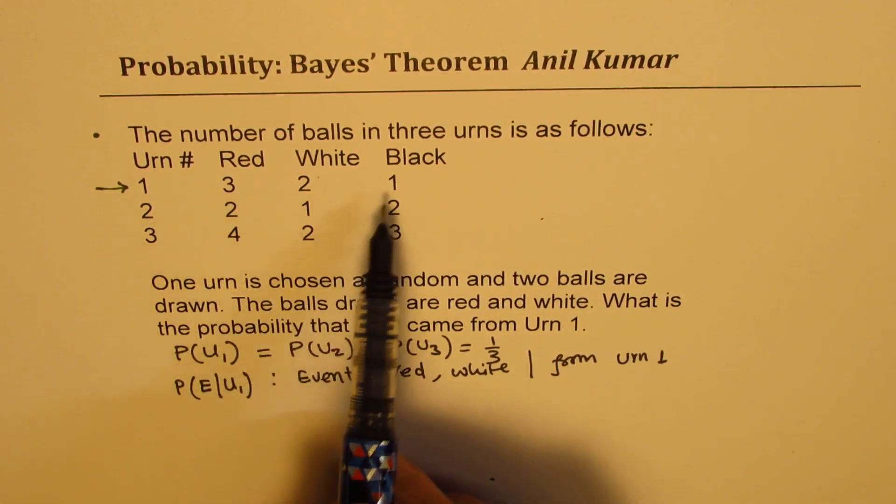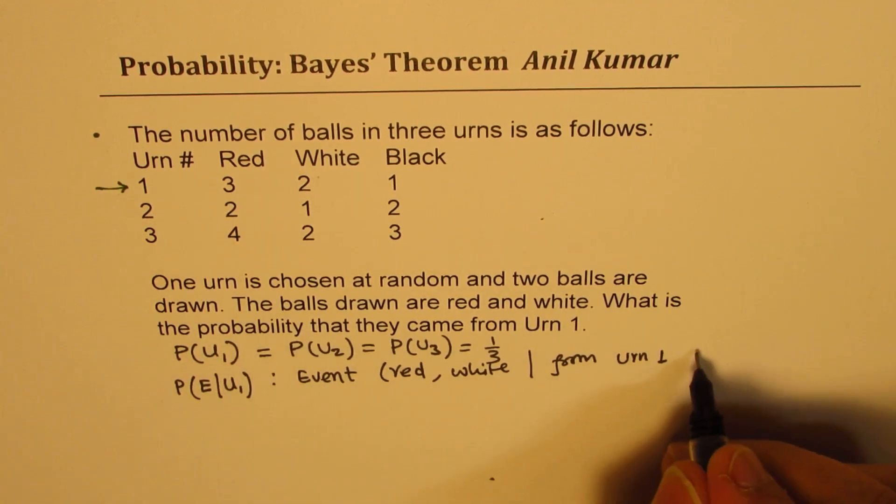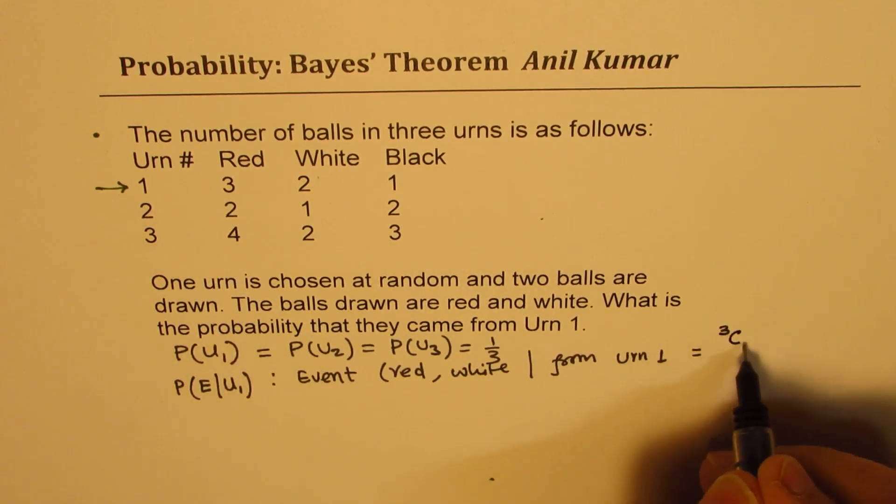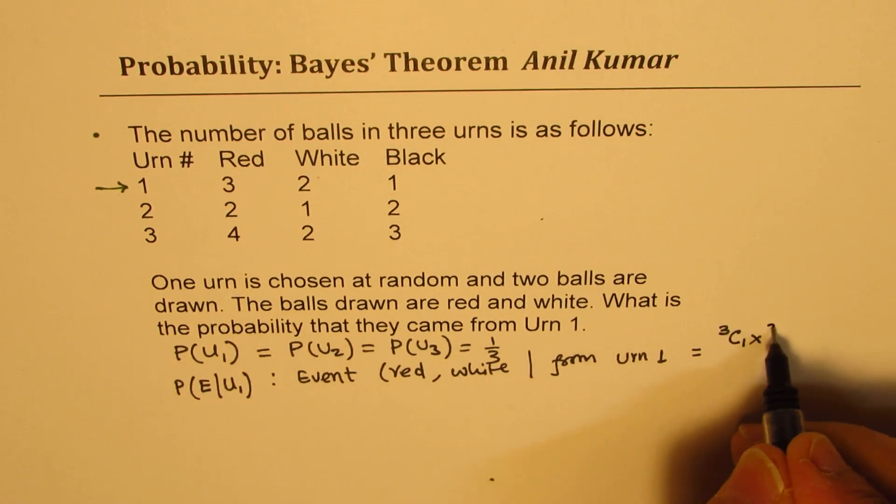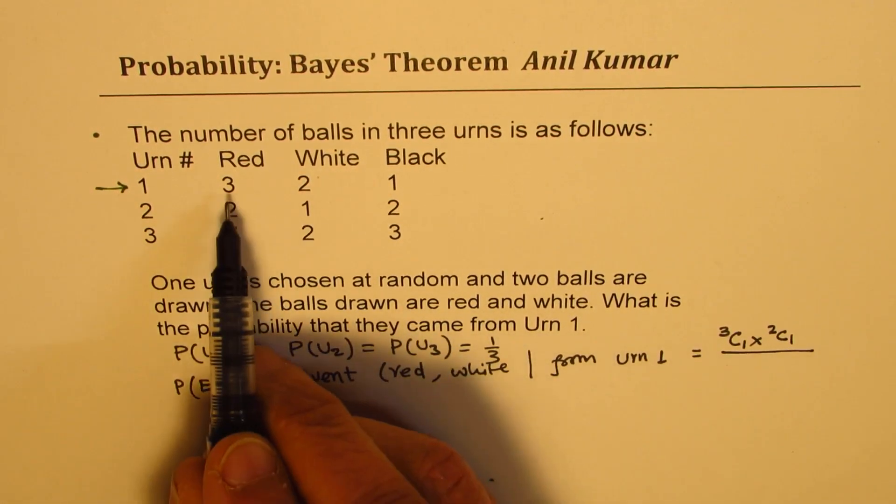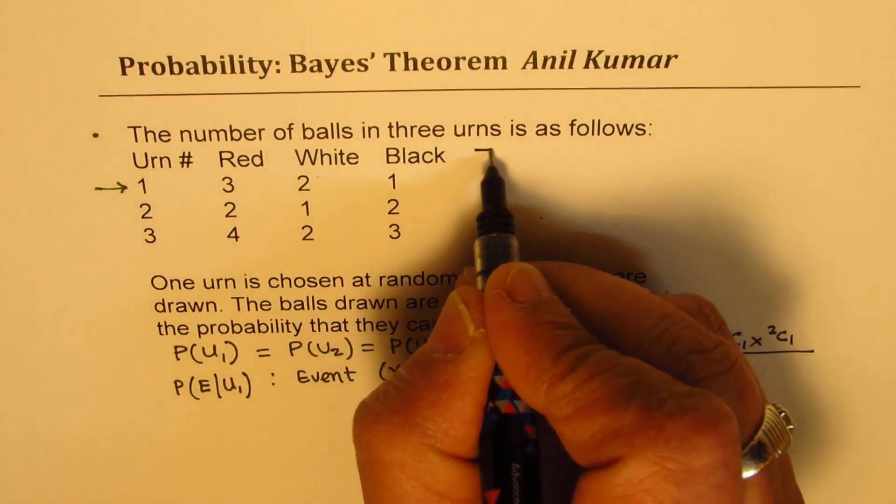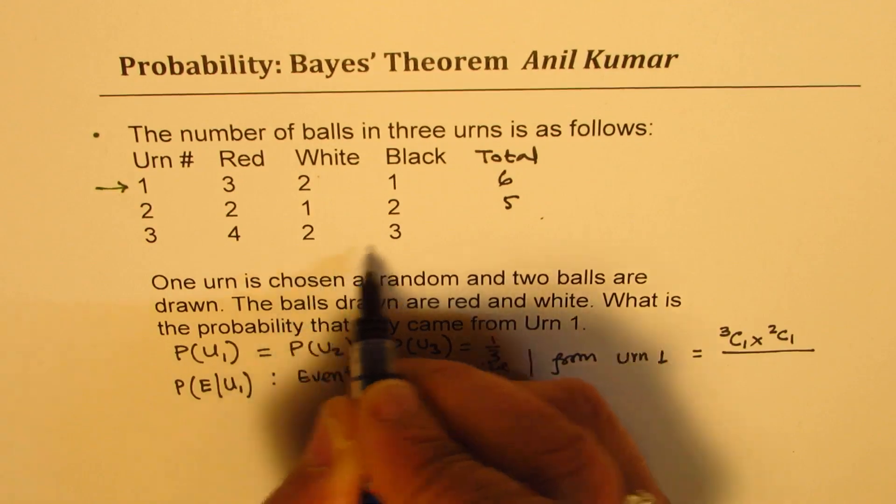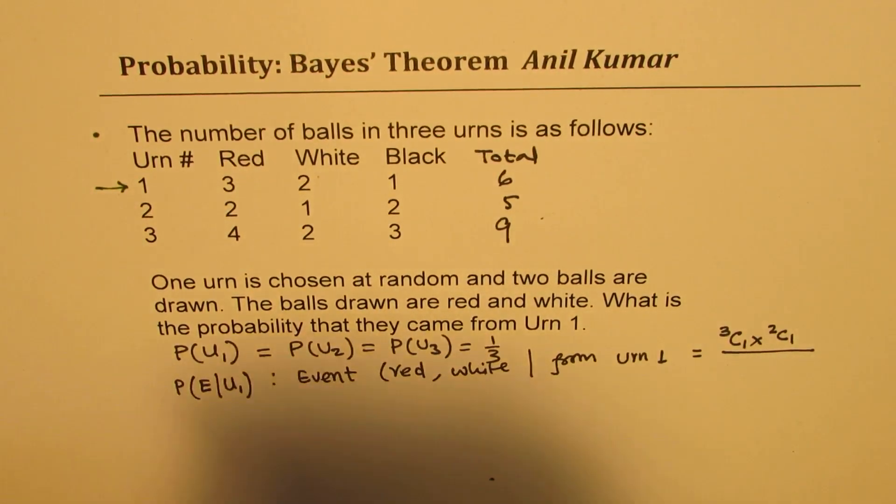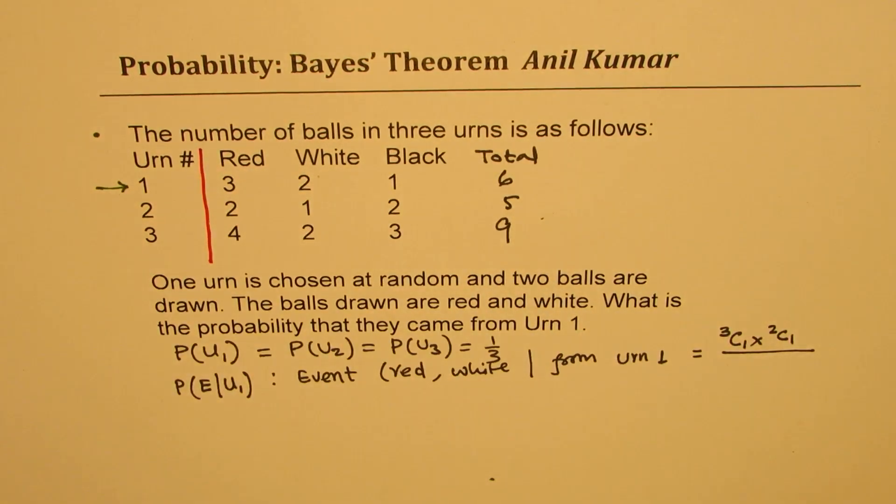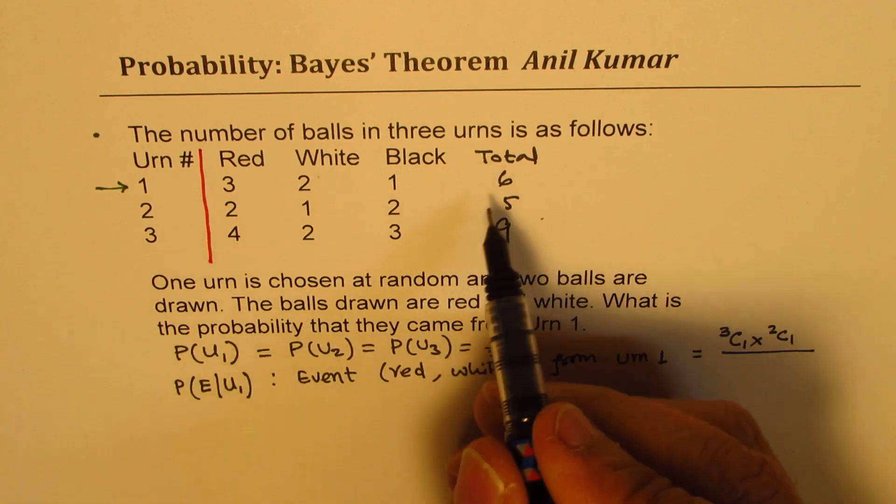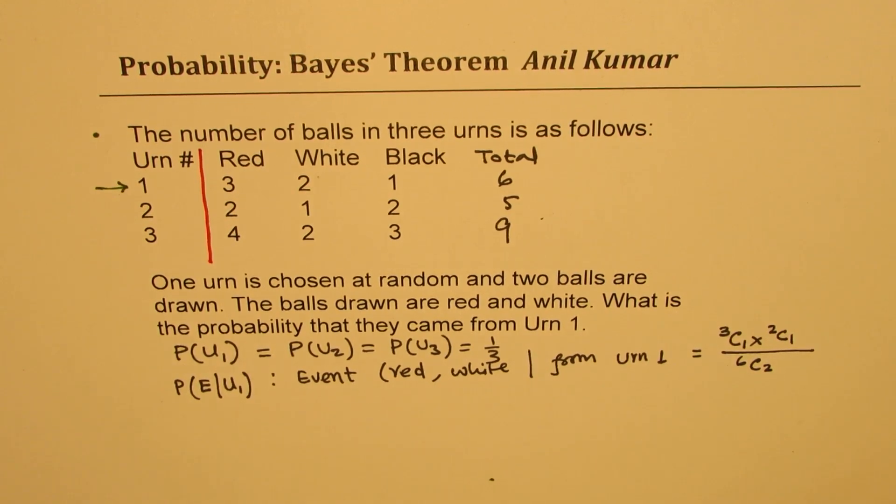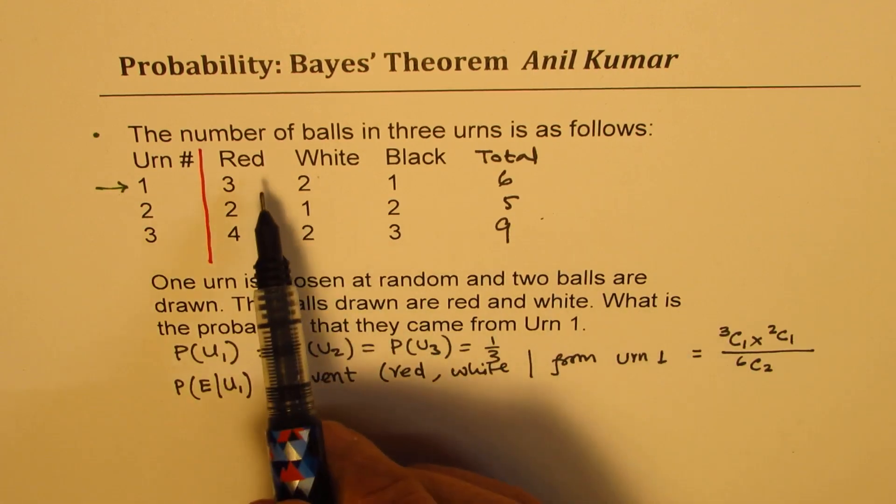So what is the probability of picking this from the first urn? The probability of picking this from the first urn, we are picking one red and one white, is equal to, since red is picked from three reds, so 3c1 times white is picked from two, so 2c1. And in all, there are how many balls in this? 3 plus 2, 5, 1, 6. So the probability will be, this will be divided by 6c2. So that is the probability of picking red or white from the first one.